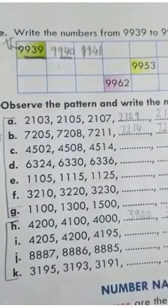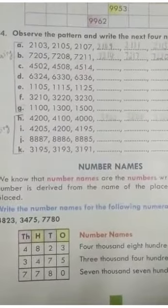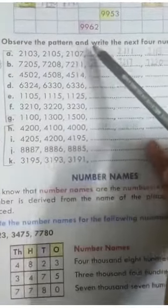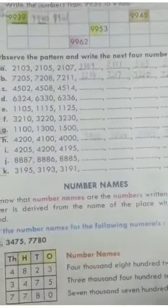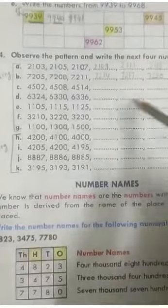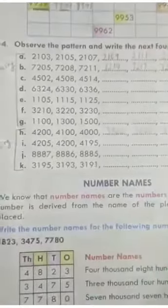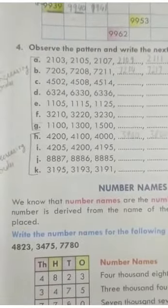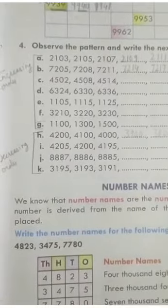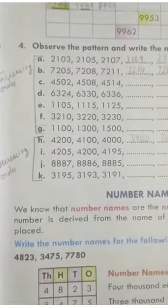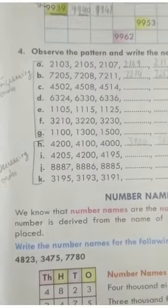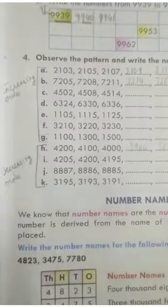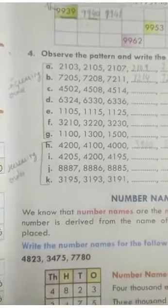I hope this topic is clear to you, my dear students. Now look at question number 4: observe the pattern and write the next 4 numbers. You have to notice whether the numbers are arranged in increasing order or decreasing order. Increasing means smaller to bigger; decreasing means bigger to smaller.